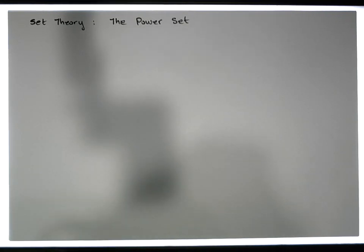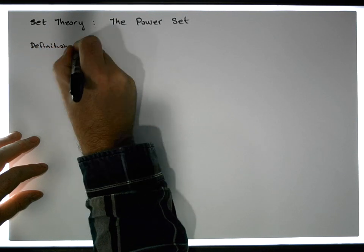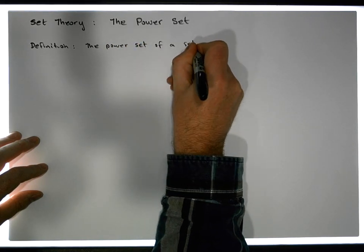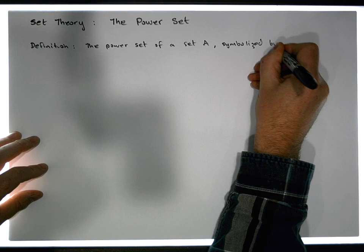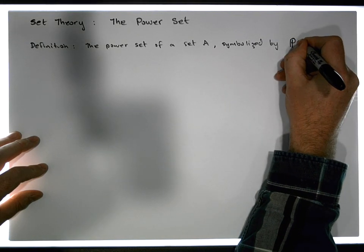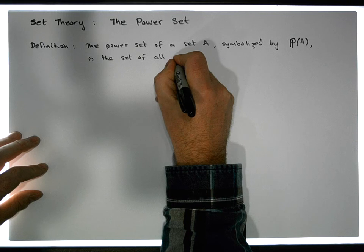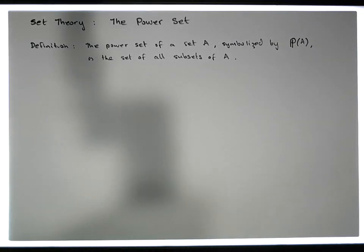To get started, we need to provide a definition in narrative form of what the power set is. By definition, the power set of a set A — symbolized by P(A), where P is a bold P — is the set of all subsets of A. So it's straightforward: it's the set of all possible subsets of a particular set.